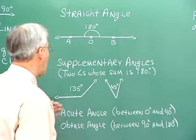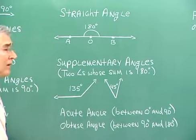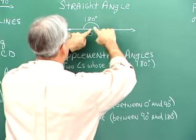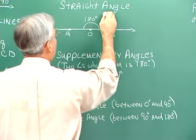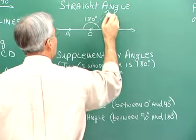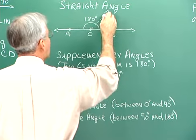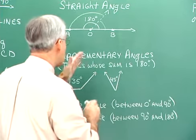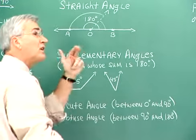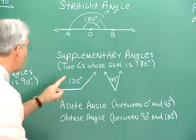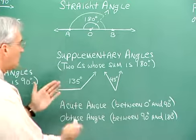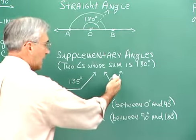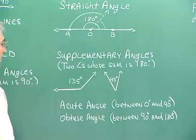Supplementary angles are two angles whose sum is 180 degrees. The two angles can be depicted where a third ray divides a straight angle, making two angles that together are supplementary. Each one is said to be the supplement of the other. The angles don't have to be attached to form a straight angle — as long as their sum is 180 degrees, they are supplements.